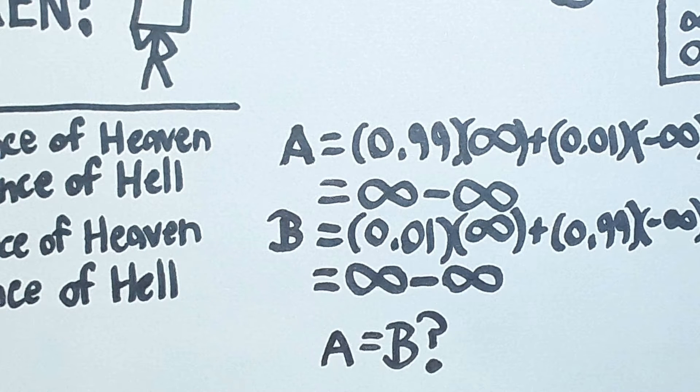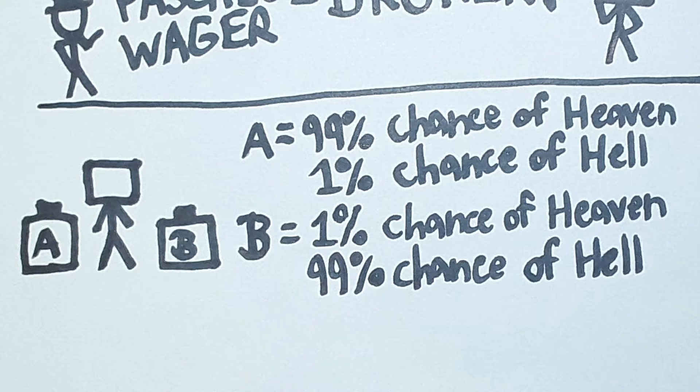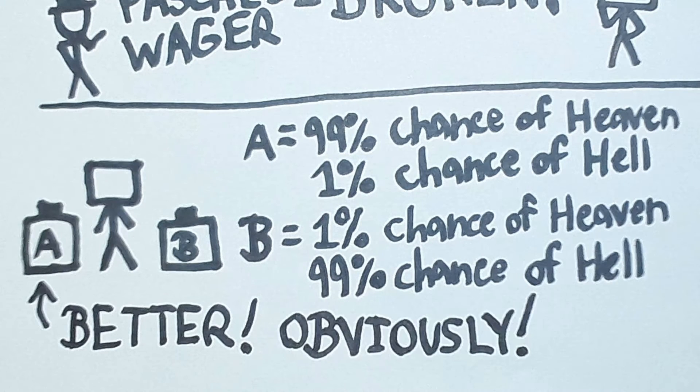But does that mean that pressing button A is just as good as pressing button B? No, that's ridiculous. We can all agree that button A is objectively better than button B for maximizing utility. But the equation we've been using hasn't reported that to us.